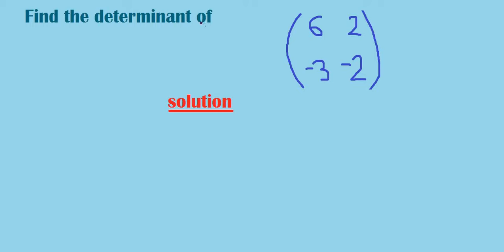Find the determinant of the matrix [6, 2; -3, -2]. When you want to find the determinant, we normally multiply the leading diagonal and then subtract it with the product of the main diagonal.